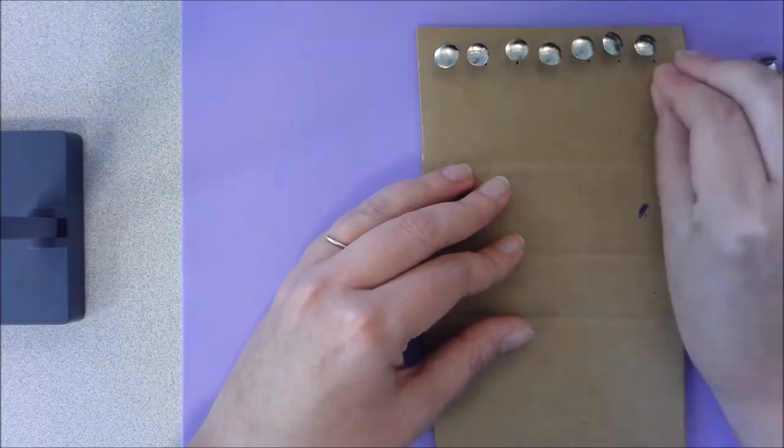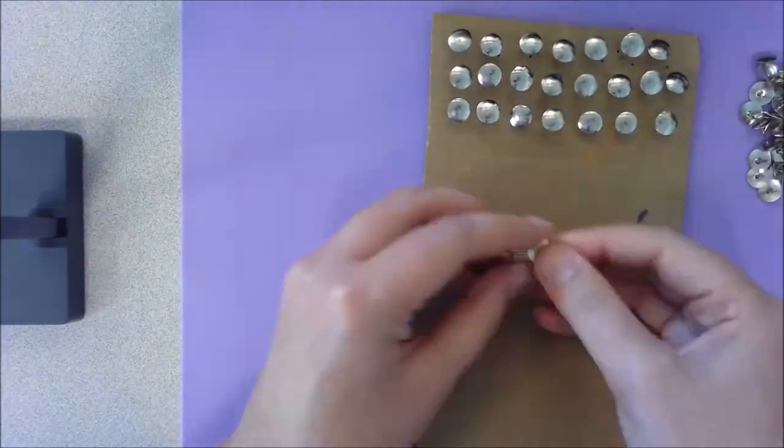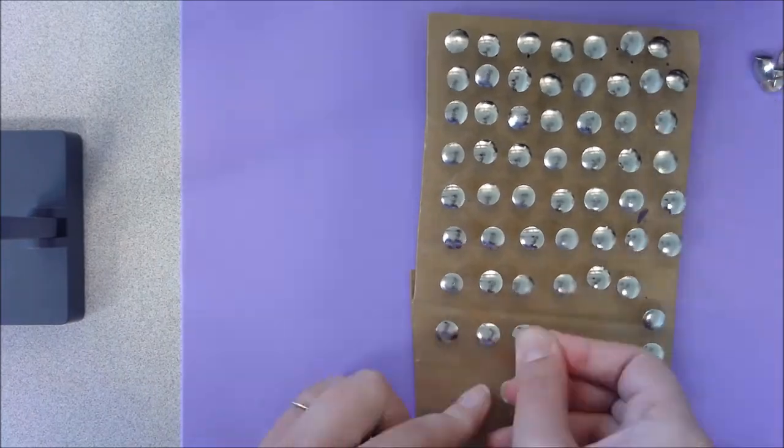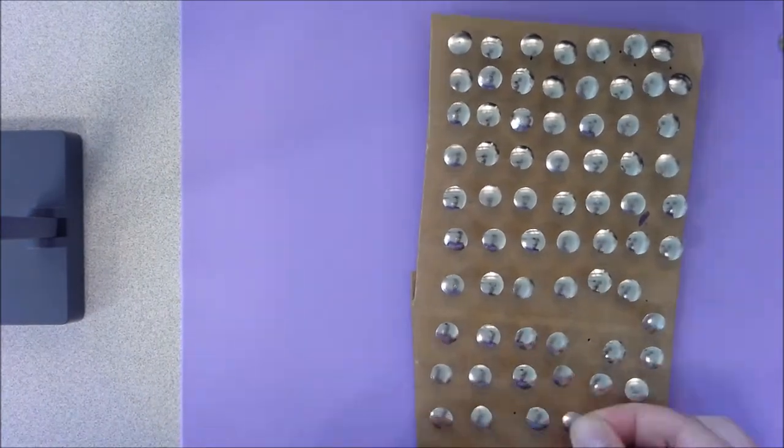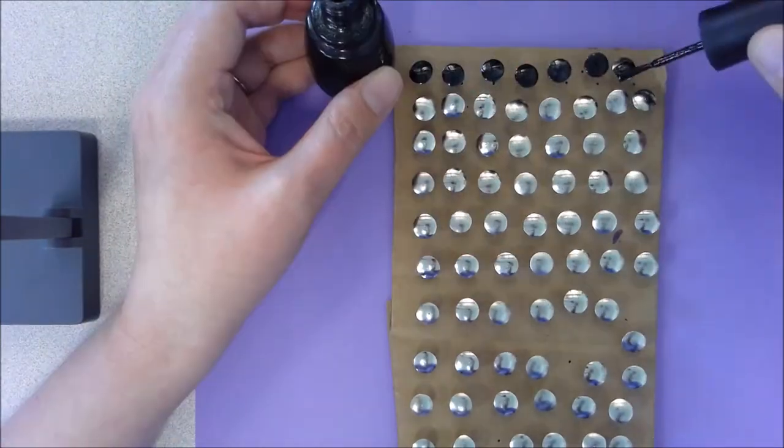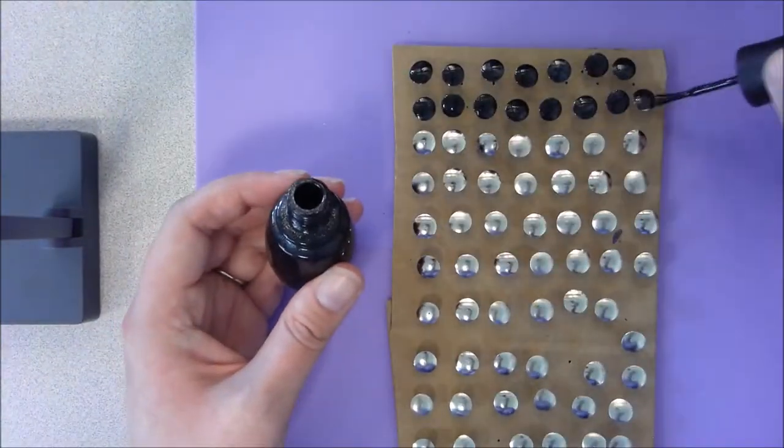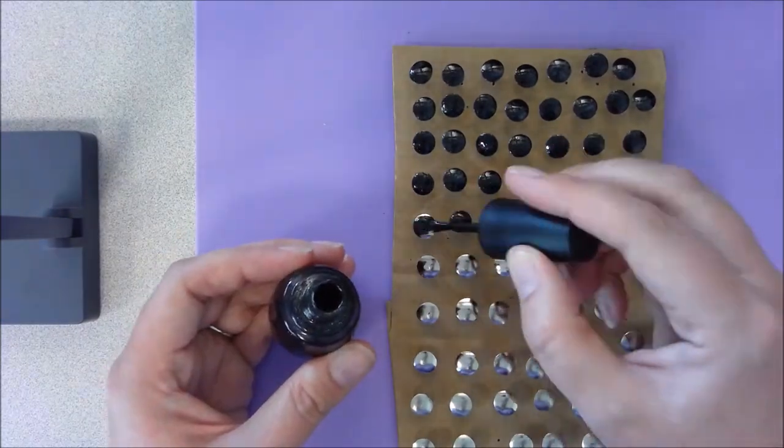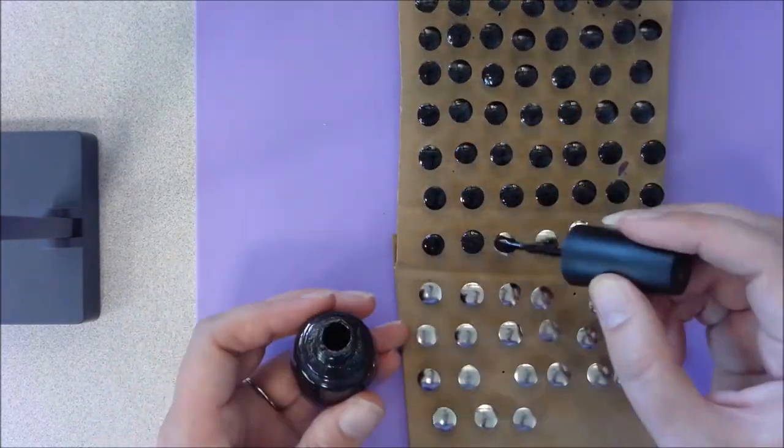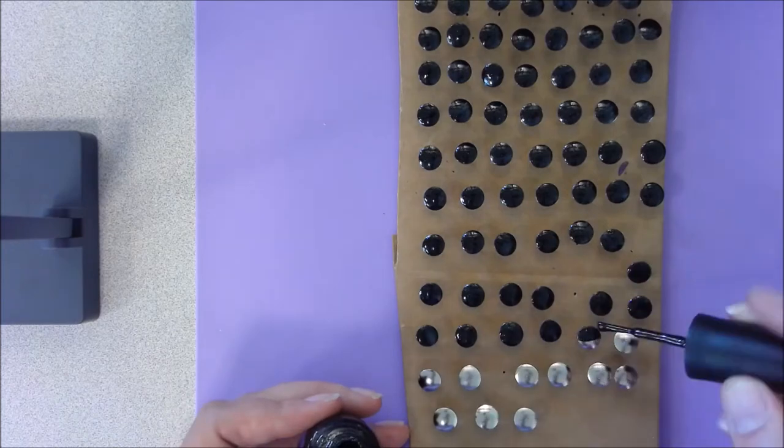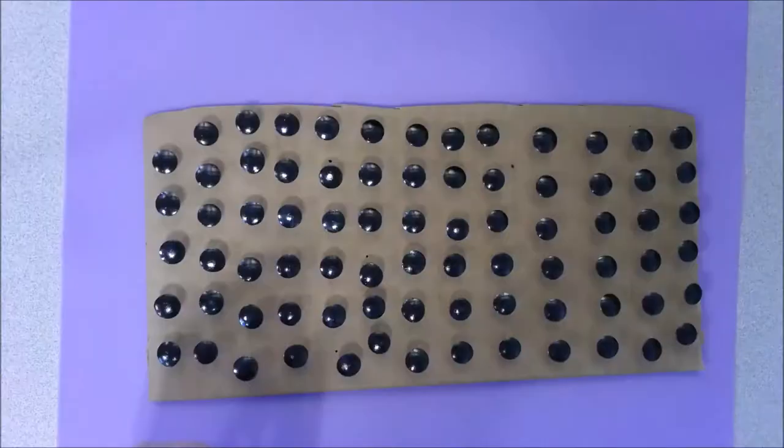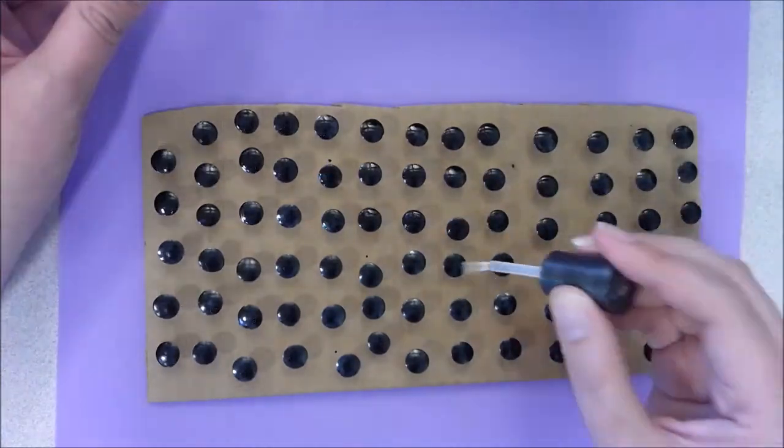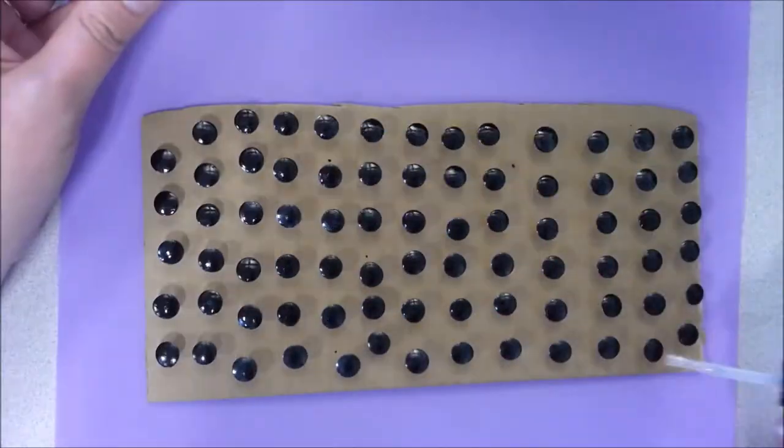So the first thing I did was added about 100 to 150 or so thumbtacks to two pieces of cardboard. Then from here, I painted each thumbtack individually. I did do two coats of the nail polish on each of them. And then I added clear nail polish to each of the thumbtacks so that the nail polish underneath wouldn't chip.